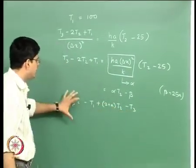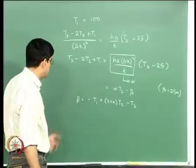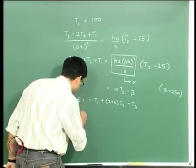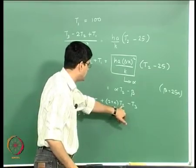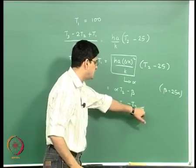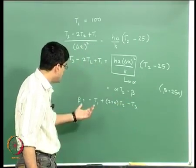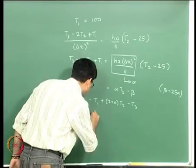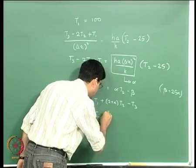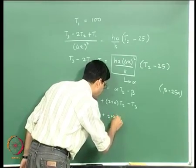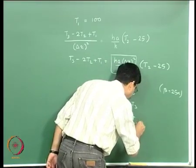We rearrange and take beta to the right hand side, and in general for the i-th element we get: beta equals minus Tᵢ₋₁ plus (2 plus alpha)·Tᵢ minus Tᵢ₊₁.